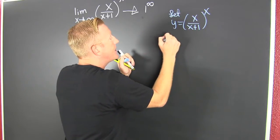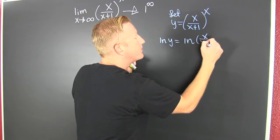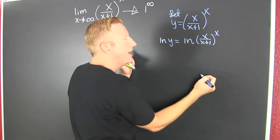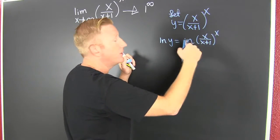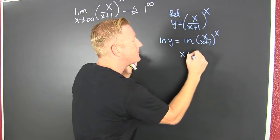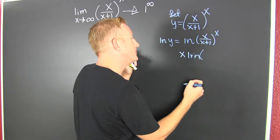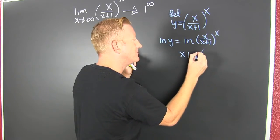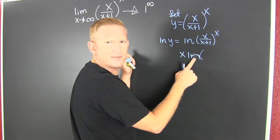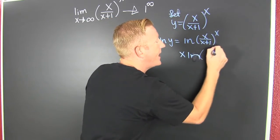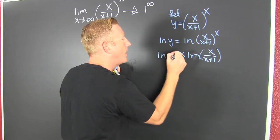Let's go log it. The natural log of Y is equal to the natural log of X over X plus one to the X. So that I can use the property of exponents — when I have an argument raised to a power, I can write that down in front: X times the natural log of X over X plus one. And that's the natural log of Y.